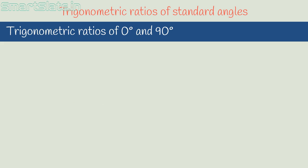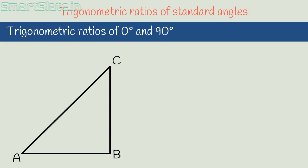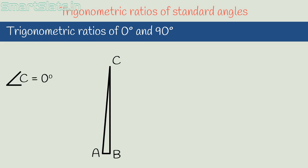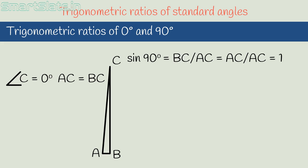Now let's find trigonometric ratios when angle theta equals 90°. Consider triangle ABC and increase angle A. As angle A increases, angle C gets smaller and smaller. When angle A is 90°, angle C is 0°, and AC becomes almost the same as BC. Sin A = BC/AC; when angle A is 90°, AC ≈ BC, so sin 90° ≈ 1. Cos A = AB/AC; when angle A is 90°, AB approaches 0, so cos 90° ≈ 0.